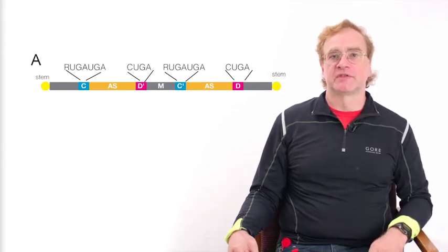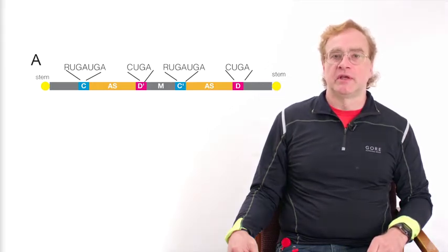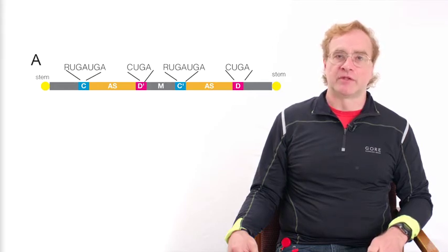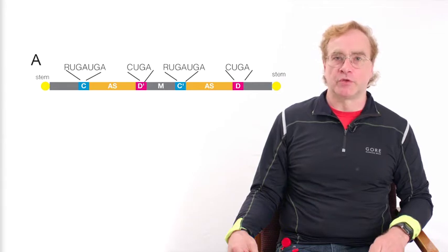The C and D boxes flank a piece of the snoRNA that is known as the antisense box. Using this antisense box, snoRNAs can interact with other RNAs such as ribosomal RNAs. In addition, there are self-complementarity regions at the ends that form a double-stranded RNA structure that prevents degradation of the snoRNA.